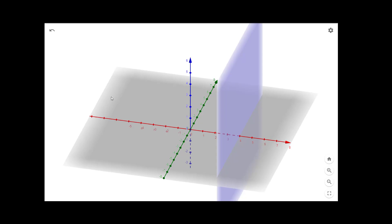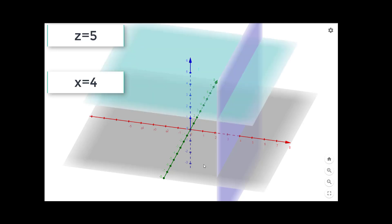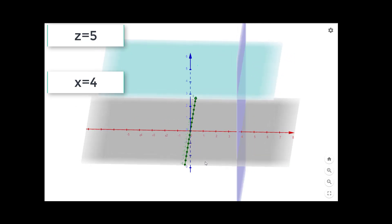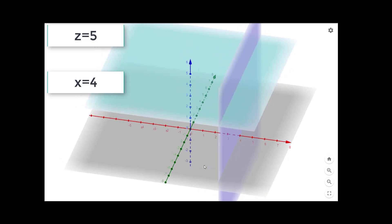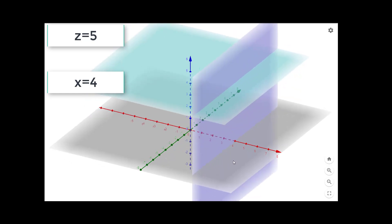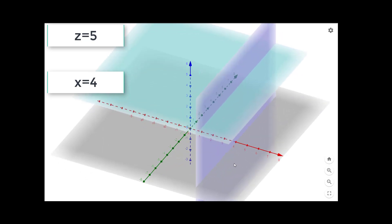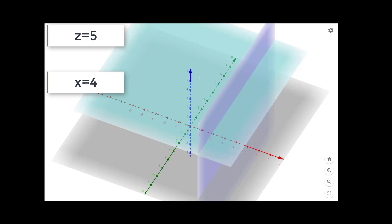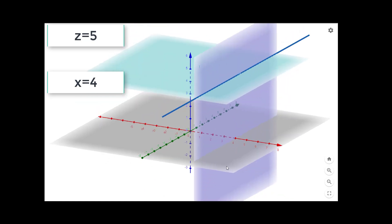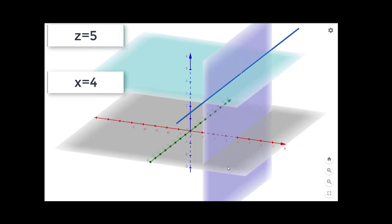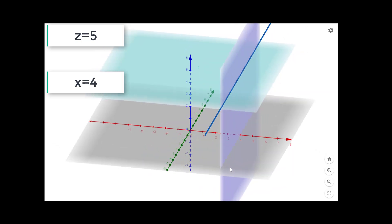Now if we introduce back our first equation, the first plane z equal to 5, we can see these two planes — the first and the third plane — are intersecting at a straight line. So if we want to know the solution of the first equation and the third equation, the solution will be this straight line. So there are infinitely many solutions for the first and the third equation.